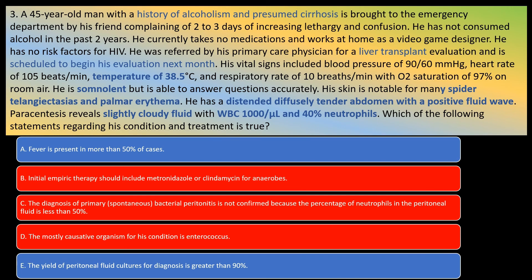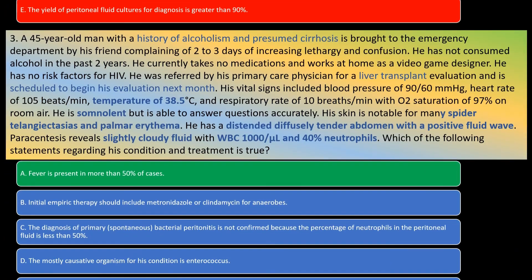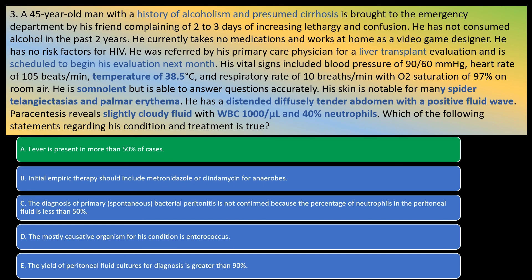Third-generation cephalosporins or piperacillin-tazobactam are reasonable initial empiric antibiotics. Diagnosis is often difficult because peritoneal culture findings are frequently negative, so option E — that the yield of peritoneal fluid cultures is greater than 90% — is also not true. The answer is A: fever is present in up to more than 80% of cases. Notably, abdominal pain, acute onset, and peritoneal signs are often absent.